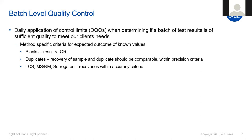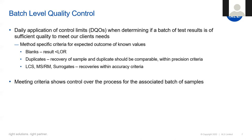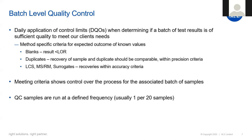For example: blanks are expected to be blank; duplicates should be comparable within our precision criteria; and spike samples — LCSs, matrix spikes, reference materials, and surrogates — should have recoveries within our accuracy criteria. Meeting the criteria shows control over the process for the associated batch. When I refer to a batch of samples, I'm generally referring to a group of 20 samples. So with each batch of 20 samples, there will be one blank, one duplicate, one LCS, and a matrix spike or reference material. Surrogates are different in that they are normally added to every single sample and QC sample.